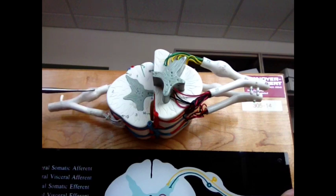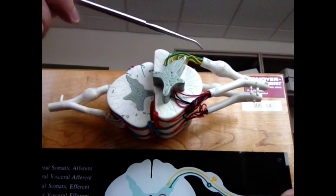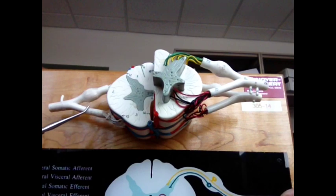This is the dorsal root in the back, and here on this side, and this is the ventral root in the front.